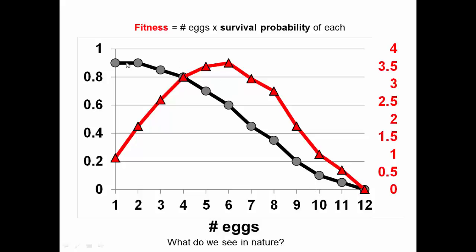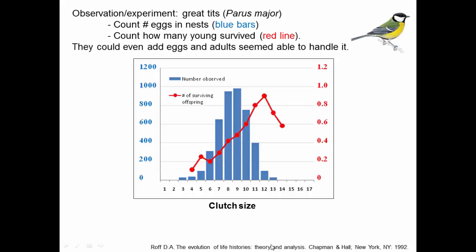This is a prediction from the notion that survival probability declines with the number of eggs. We can compare that to what we actually see in nature. Do organisms actually lay the predicted number of eggs? Here's an example — this data comes from a study of Parus major. They went to a series of nests, counted the number of eggs, then went back repeatedly, banded birds, and counted how many of the young survived. In this plot, the blue bars show the number of nests with each egg count — most nests had eight or nine eggs, a few had three or four, and a few had twelve or thirteen.